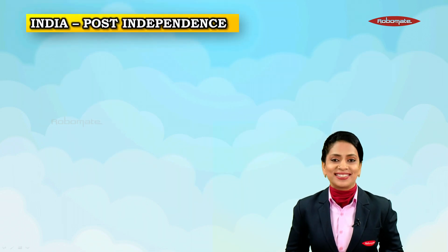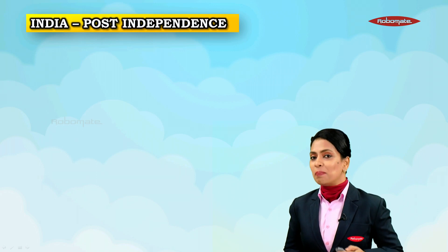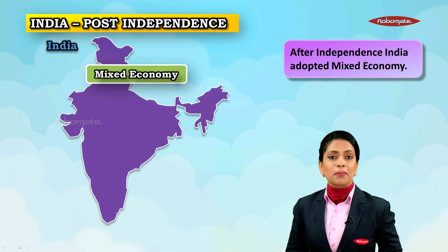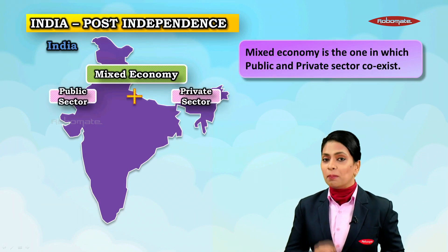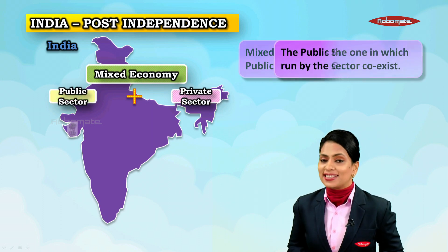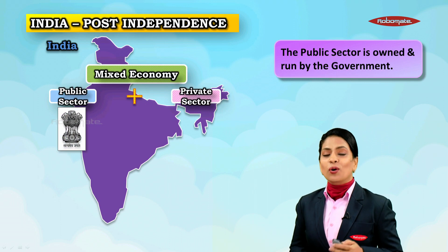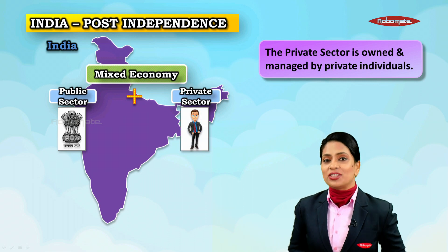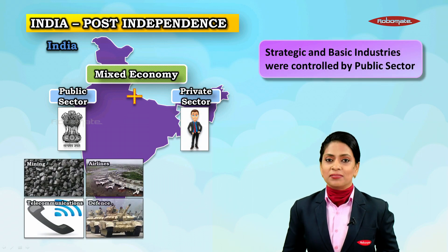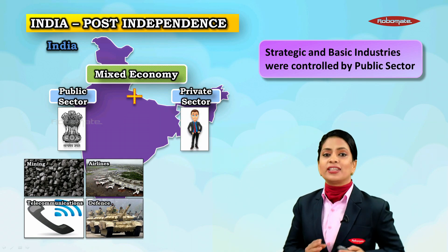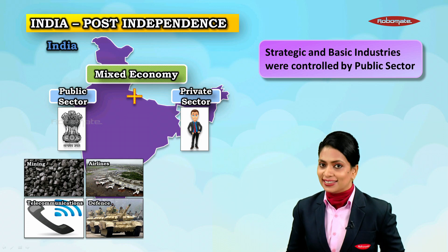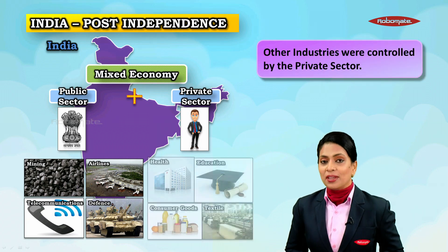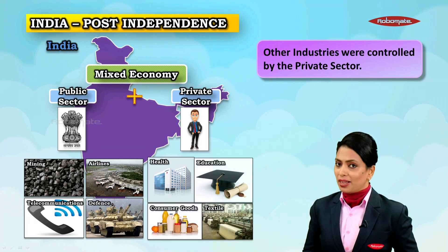Colonies like India, which were under British rule, exported raw materials and foodstuffs and imported finished goods. Then came India's independence and the post-independence stage. After independence, India adopted the mixed economy. In a mixed economy, the public and private sectors coexist. The public sector is owned and run by the government, while the private sector is owned and managed by private individuals. Strategic and basic industries like defense, telecommunications, railways, and iron and steel were controlled by the public sector.